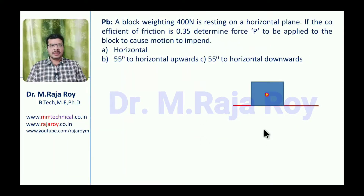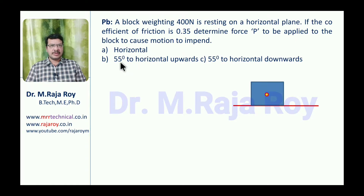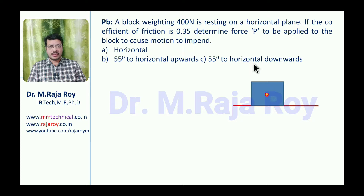Now we will solve a problem. A block weighing 400 N is resting on a horizontal plane. If the coefficient of friction is 0.35, determine the force P to be applied on the block to cause the motion to impend. We want to slide the block. Case 1: force applied in the horizontal direction. Case 2: force applied at 55 degrees upward. Case 3: force applied at 55 degrees downward. We have to find the required force P in each case.